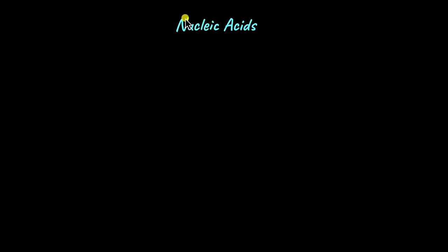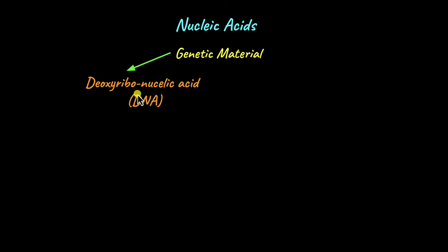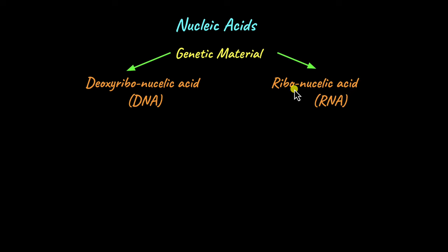In this video, we are going to learn about nucleic acids, which are world famous for being the genetic material in all organisms. DNA, or deoxyribonucleic acid, is a type of nucleic acid that is the genetic material in all prokaryotes, eukaryotes, and a lot of viruses. RNA, or ribonucleic acid, is the genetic material in some viruses, but all other organisms in the world have DNA as their genetic material.